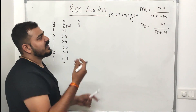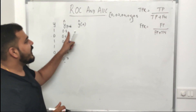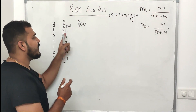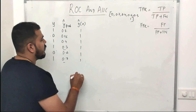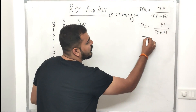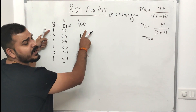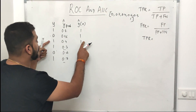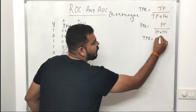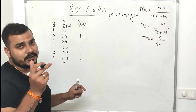First, if I set my threshold value as 0, then all predicted probabilities are greater than 0, so all y_hat values become 1. Now I calculate the true positive rate, which is TP divided by TP plus FN. Here, actual value 1 with predicted 1 gives true positives — I have 4 true positives. Divided by 4 plus false negatives: in this scenario I have no false negatives, so TPR equals 1.